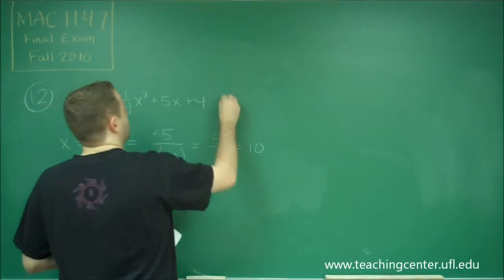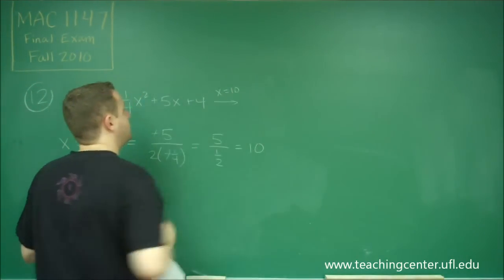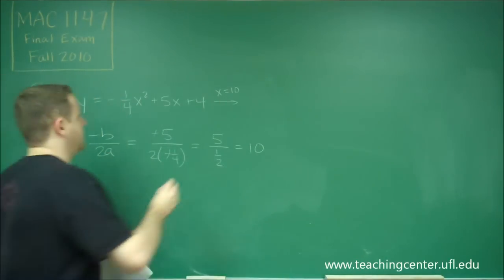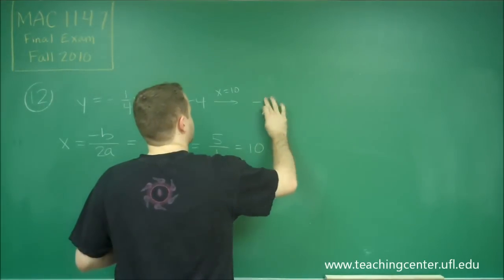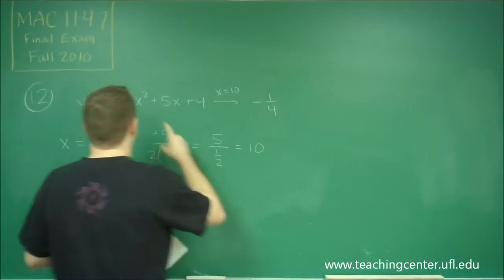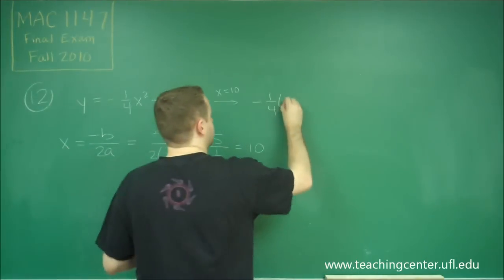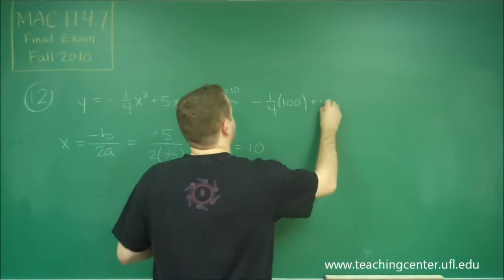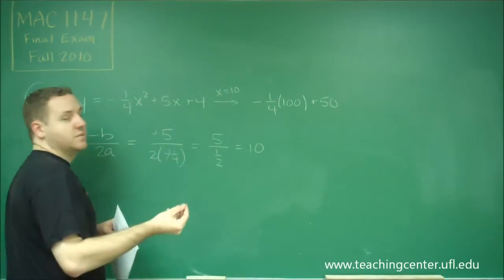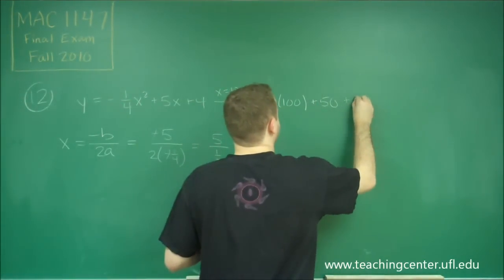What we get is negative one-fourth times 10 squared, which would be 100, plus 5 times 10, which would be 50, plus 4.